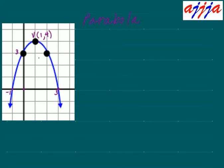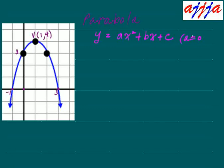Let's find out the equation first — the functional equation. The equation looks like this: y equals ax squared plus bx plus c. That's the original equation. In this case, a cannot be 0 — you know that already.